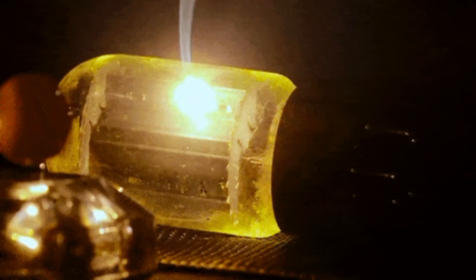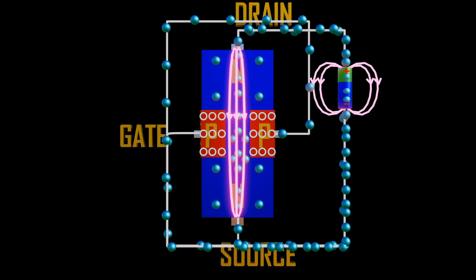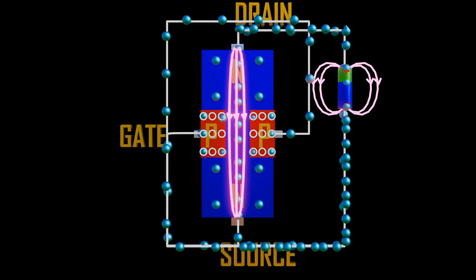By 1959, semiconductor components were proving to be dependable and efficient. They become widely available, tube-based systems were replaced by solid-state equipment.